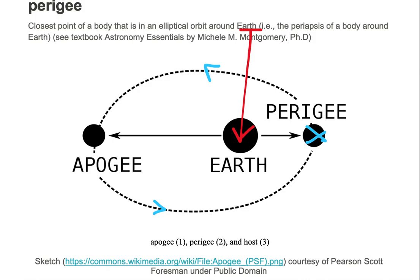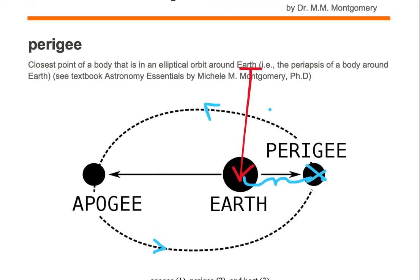Perigee is the point in the elliptical orbit where the object is at its closest point to the earth. We would really give a distance for perigee, telling us how far away the object is from earth, but the point in the elliptical orbit is known as perigee.